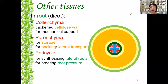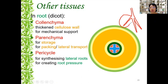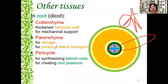Lateral roots are the branches coming out from the main root. The branch root grows from the pericycle layer. If you look at a slide, you start to see lateral root growing outwards from here — the branch root grows from the pericycle layer. Pericycle also functions to create root pressure, which you'll learn later.